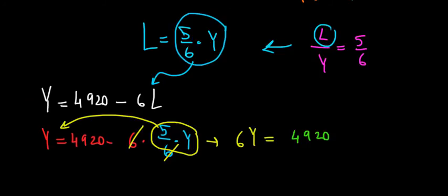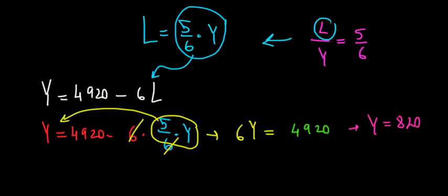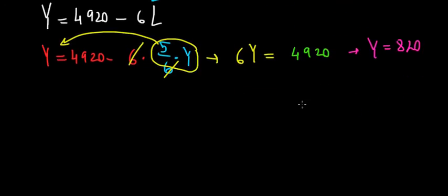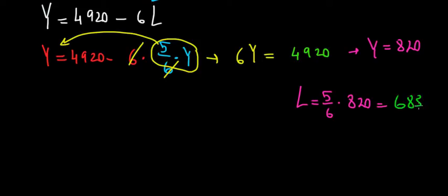Solving, income y = 820 euros. The leisure is then l = (5/6) · 820, which equals 683.3 hours.